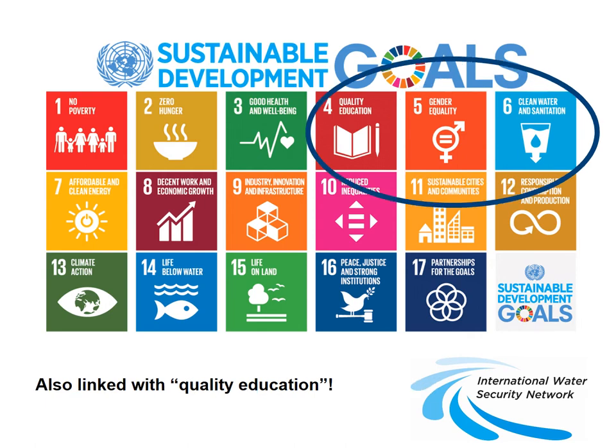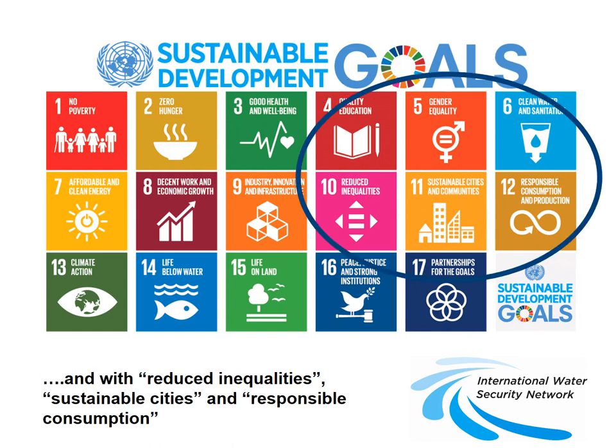SDG 4 is very important, because one of the ways we progress towards SDG 6, and indeed any other SDG, is through capacity building — through helping build human capital, that bank of knowledge and skills in local communities that can be used to address water challenges, food challenges, infrastructure challenges, any kinds of challenges. So in fact, all of the SDGs are ultimately linked.